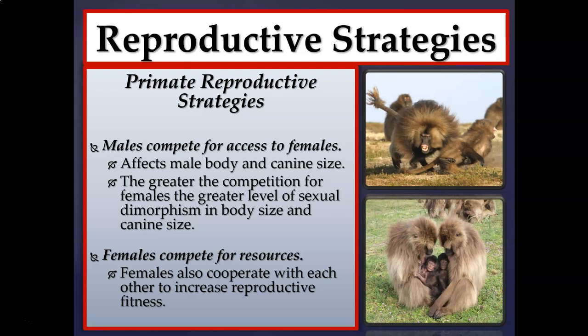Regarding reproductive strategies, we touched on sexual dimorphism in the last chapter and how it can predict the level of competition in a group. In general, males compete for access to reproductive mates, which affects overall male body size and canine size. In baboons, for example, males are much larger than females and have sexually dimorphic canines — much larger and more projecting — than females. High levels of sexual dimorphism indicate high levels of competition for mates.